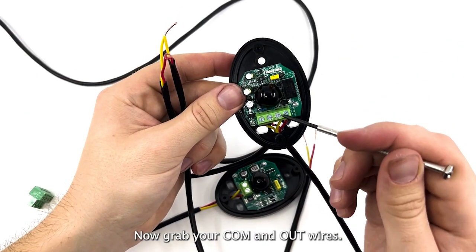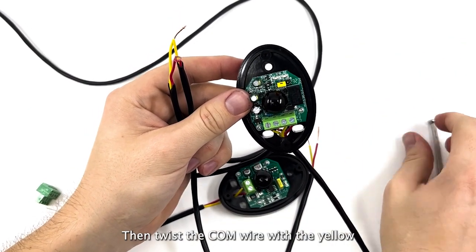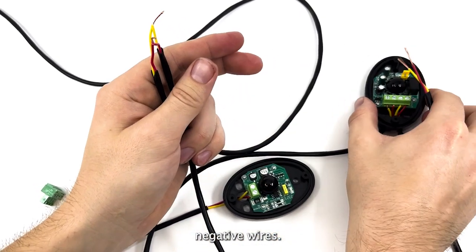Now grab your COM and OUT wires. Then twist the COM wire with the yellow negative wires.